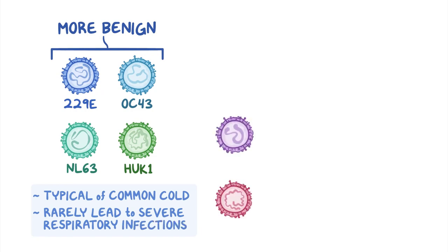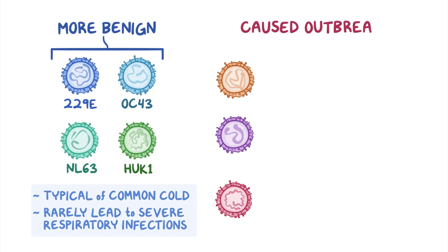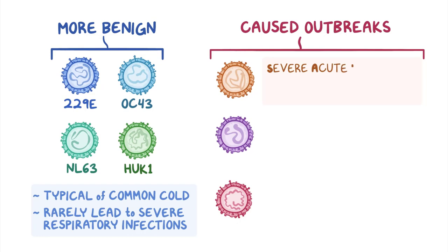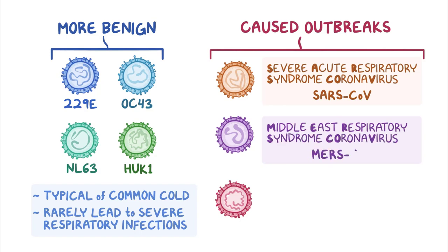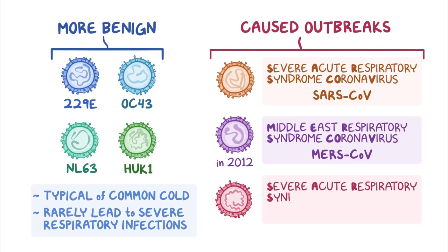But three of the seven coronaviruses that affect humans have caused outbreaks of severe and sometimes fatal respiratory infections, including severe acute respiratory syndrome coronavirus (SARS-CoV), Middle East Respiratory Syndrome Coronavirus (MERS-CoV) causing MERS in 2012, and severe acute respiratory syndrome coronavirus 2 (SARS-CoV-2).